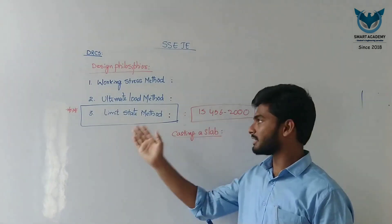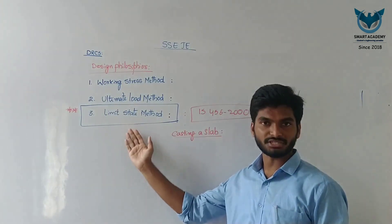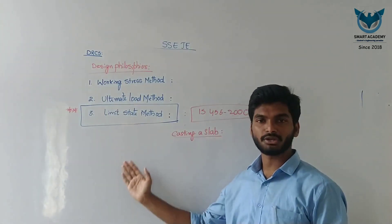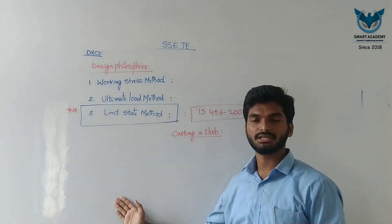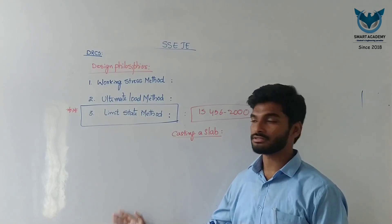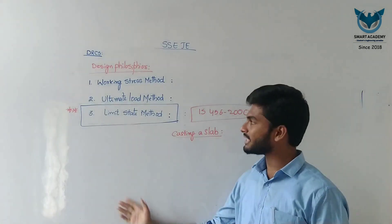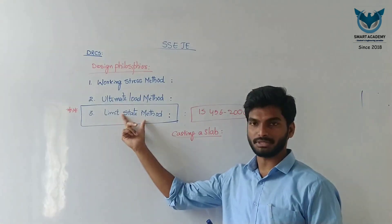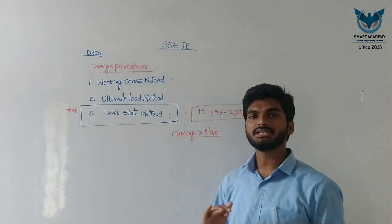We use IS 456-2000 for the limit state design of various beams, slabs, columns, footings, and deflections of various members — all done under the limit state method.